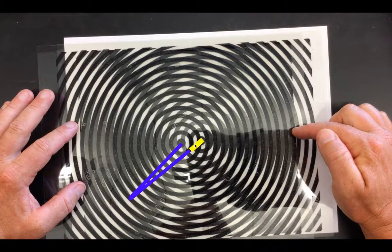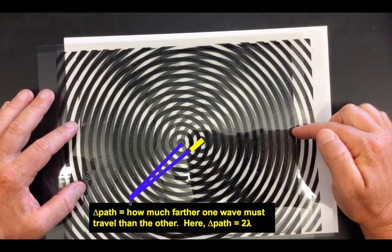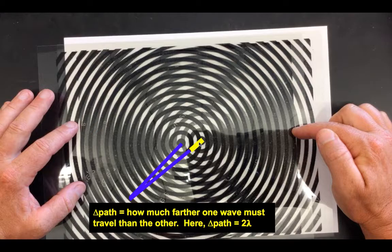This yellow segment here would be the path difference for this point. Now at this point — we're wiggling the mouse — the path difference happens to be two wavelengths. So again, the path difference is how much farther one wave had to go than the other, and that discrepancy in distance is the yellow segment shown here.